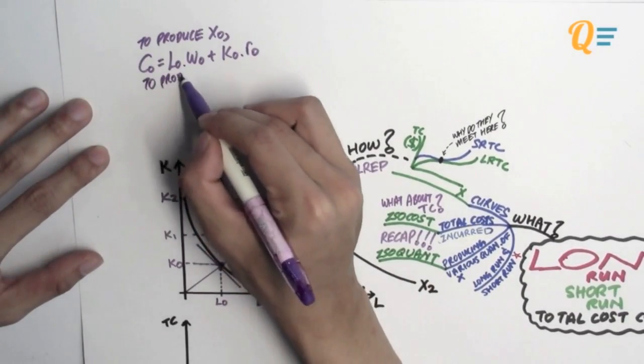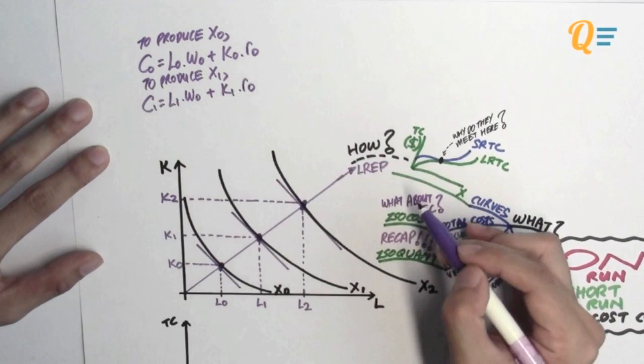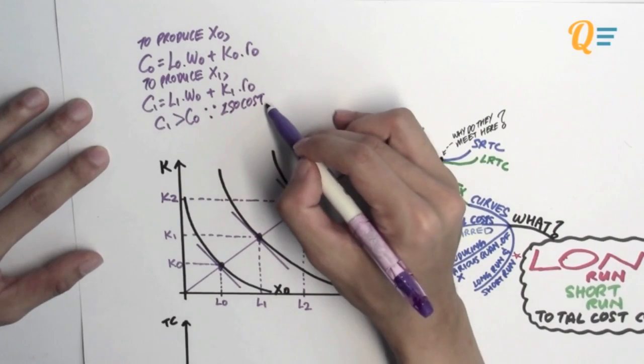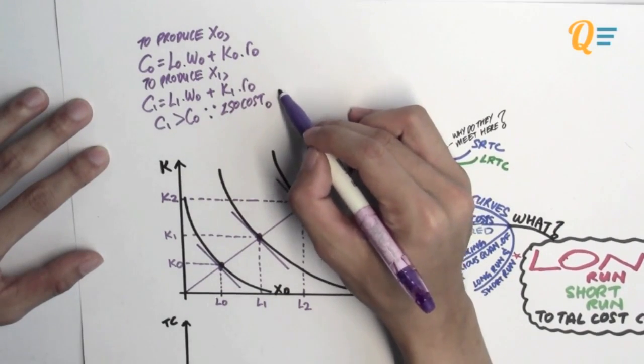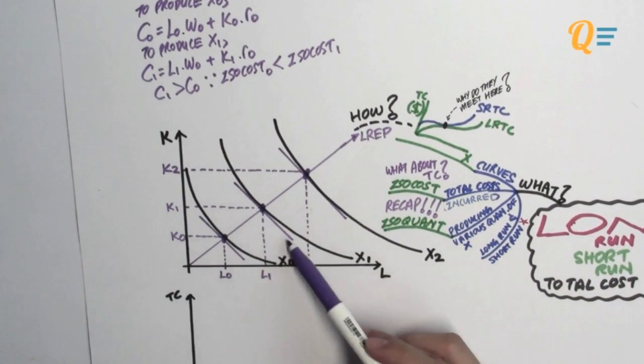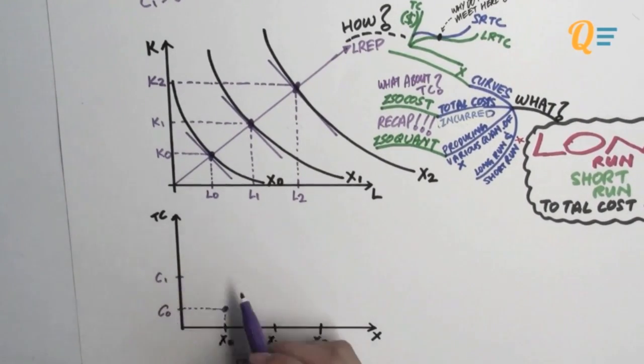Okay, so that's how we find the total cost. So how about the total cost to produce X1? Well it will be C1 equals to the amount of labor, which is L1, multiplied by the wage rate plus K1 multiplied by the interest rate. Now it should be obvious to you that C1 is more than C naught because the isocost from which X naught is produced is lower than the isocost from which X1 is produced. Notice this isocost and that isocost.